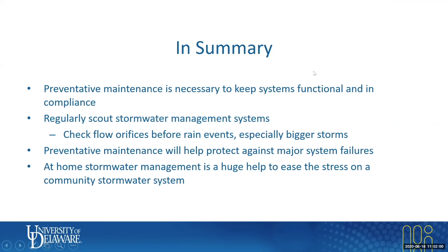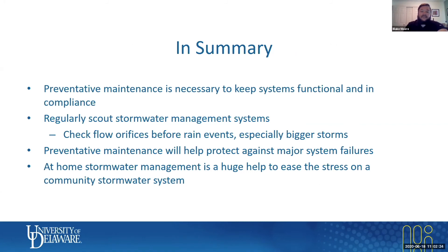In summary: preventative maintenance is necessary to keep your systems functional and in compliance. Regularly you'll see a problem before it becomes a big problem — seeing some erosion around a pipe and fixing it before it washes out your entire pipe is going to save you a lot of money and keep your system functional. If a big storm is coming, I suggest going out and checking all your inflows and outfalls to make sure they're flowing, because a simple clogged outfall can cause major flooding during a storm. At-home stormwater management: never underestimate the effect you're having on the system. If you have a lot of water leaving your property, doing a few things to help prevent that is huge and will help in the long run.